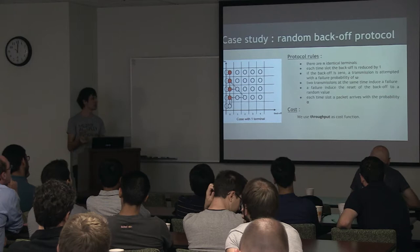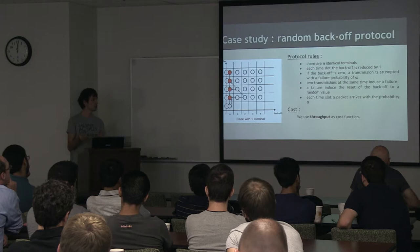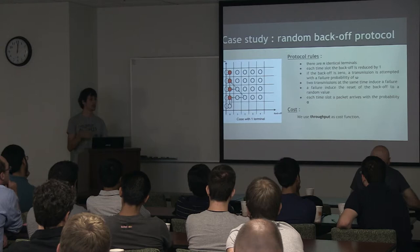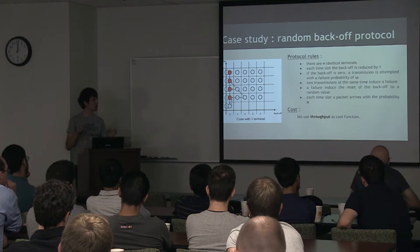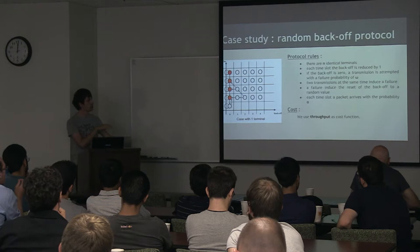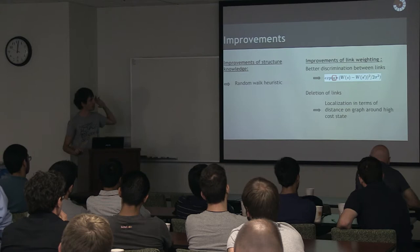Each terminal has a backoff counter and buffer queue, and at each time slot the backoff is reduced by one. If the backoff counter reaches zero, we attempt a transmission. If the transmission is successful, we attempt a new transmission, and if the transmission fails, the backoff counter is reset to a random value. At each time slot we have certain probabilities that a new packet arrives in the buffer. Finally, I use the throughput as a cost function.